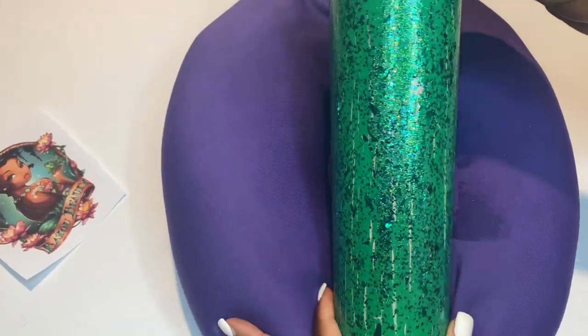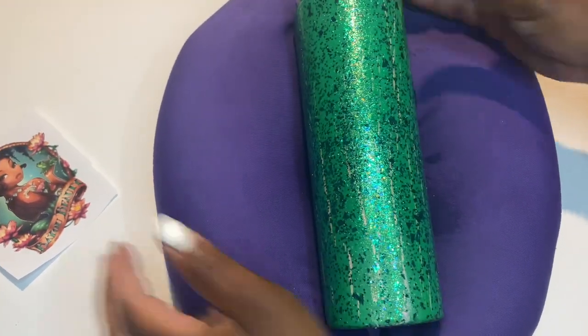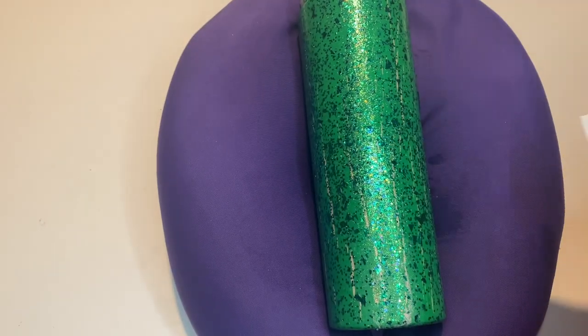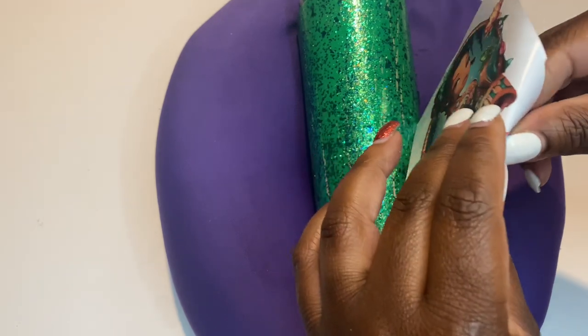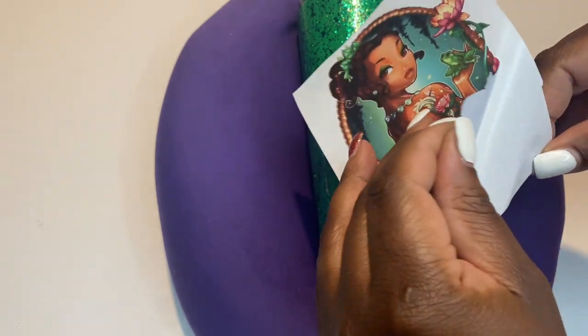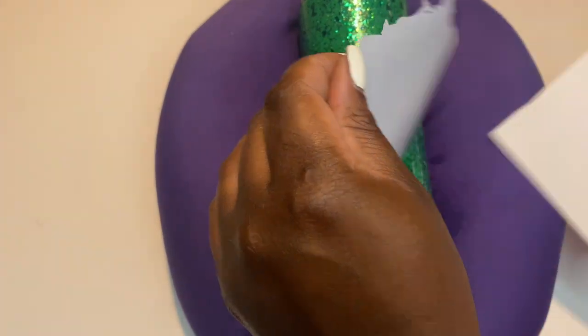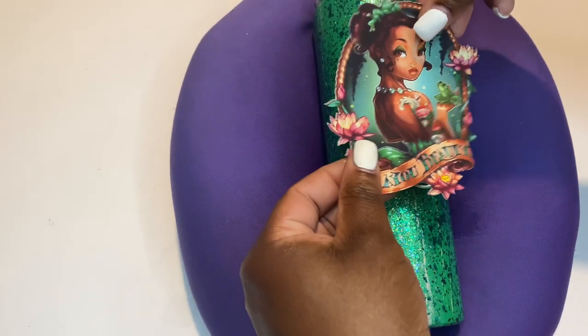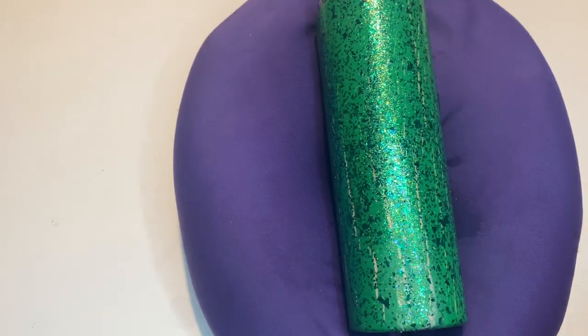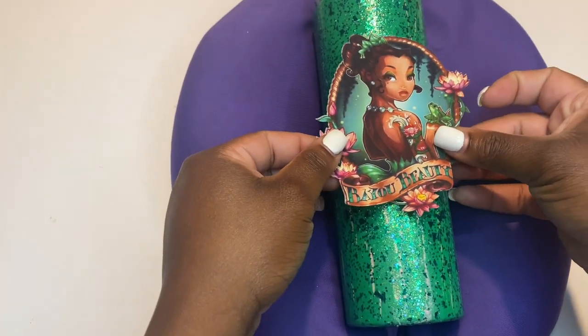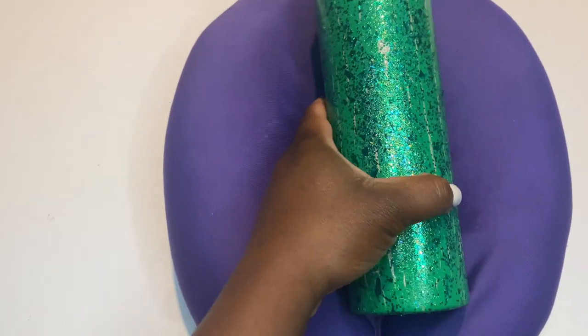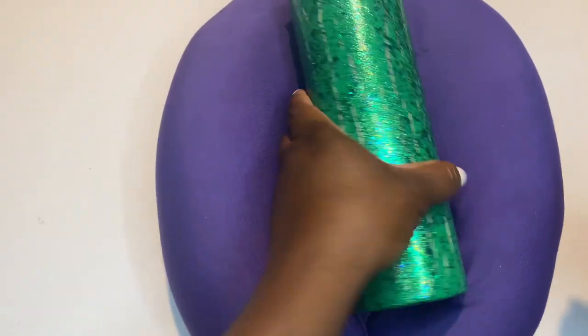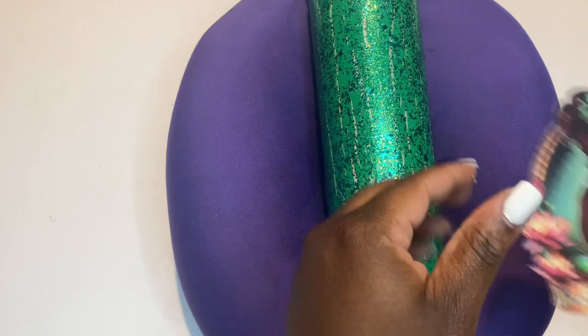Now this tumbler has dried and I am ready to add on the decal. I got this decal from Etsy. It is basically look up Disney pin up princess. This is the one that I found for Princess and the Frog. I went ahead and printed this on printable vinyl and I used the highest quality picture settings. I'm just going to place this decal right where I want it in the middle. I'm trying to determine which one I think looks best.